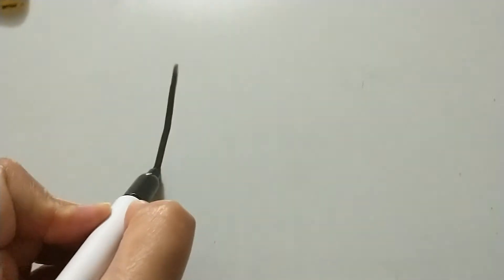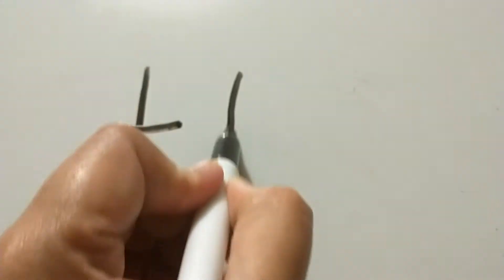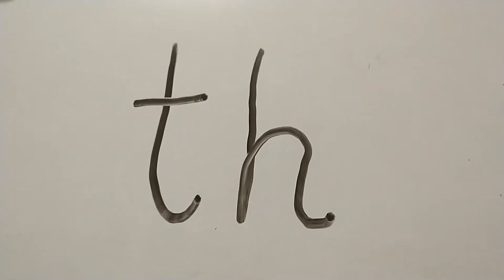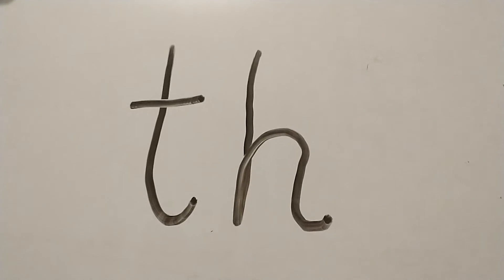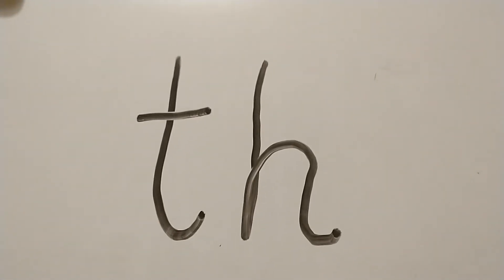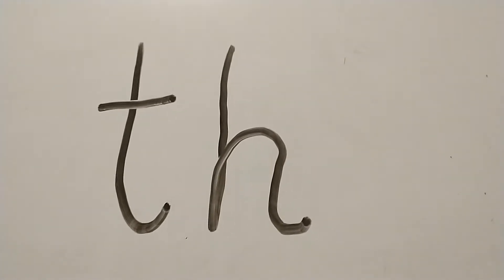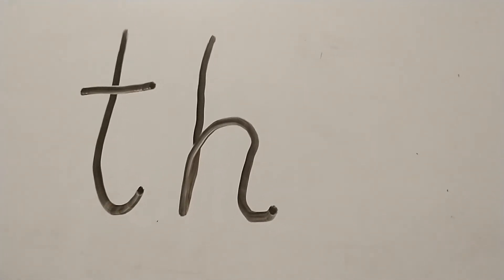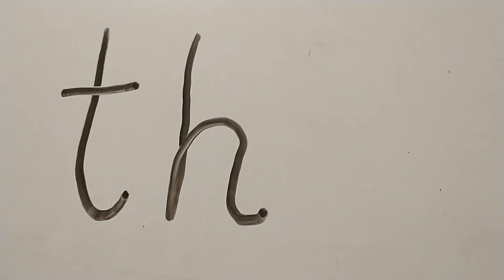Hello children. In today's video we're going to focus on the letter T and the letter H. When we put these two letters together, it produces the sound TH. We're going to put some more words in front of the sound TH to see what sight words we can make. Our lesson for today is to learn some new sight words starting with the sound TH.